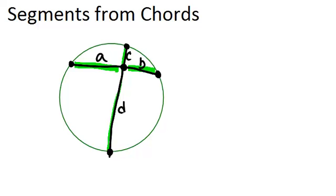The relationship is the product of the lengths of the two segments on each chord will be the same. So in other words, A times B will be the same as C times D. And notice that A and B are on the same chord and C and D are also on the same chord.